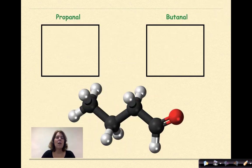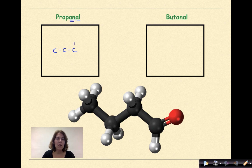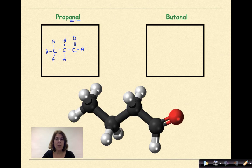Let's do two examples of aldehydes. The first is propanal — prop meaning three carbons, with single bonds between the carbons. The -AL ending means that C double-bonded O is always on an end carbon — that's your aldehyde. We represent the remaining bonds and hydrogens around the other carbons. The condensed structural formula is CH₃CH₂CHO. Remember, writing CHO indicates an aldehyde.